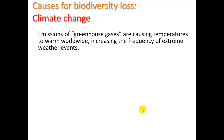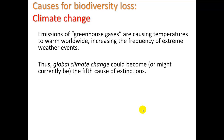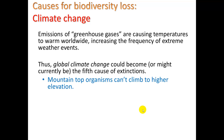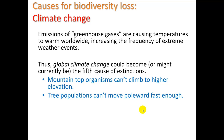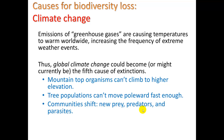Climate change: emissions of greenhouse gases — CO2, methane, and NO2 — are causing temperatures to warm worldwide and increasing the frequency of extreme weather events. Global climate change could be, or might currently be, the fifth cause of extinctions. Examples include mountaintop organisms that can't climb any higher to reach colder temperatures and simply die off, or tree populations that migrate by spreading seeds over generations but can't keep up if the climate changes too fast. Communities can also shift — organisms that migrate as temperatures and weather patterns change are essentially becoming introduced, non-native species in new areas, generating whole different types of community interactions.